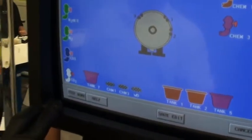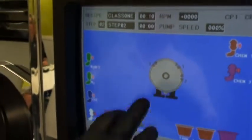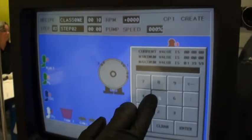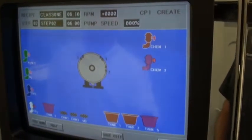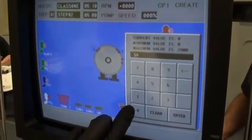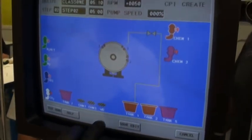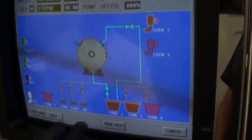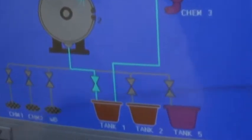And then we're going to be at step two. We'll put our time in, this will be five minutes, RPM 50, and we'll deliver from tank one and reclaim back to tank one. Step done.